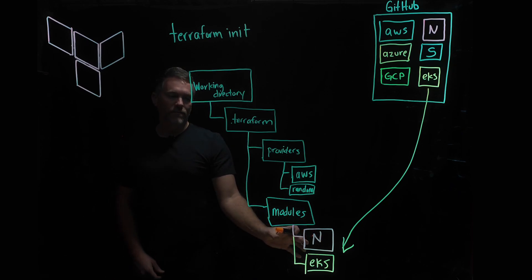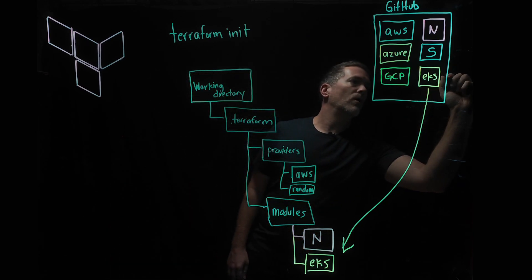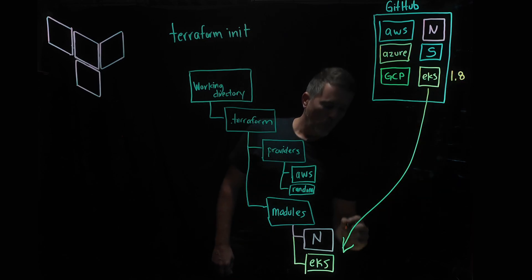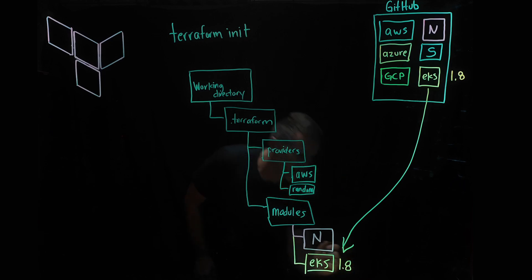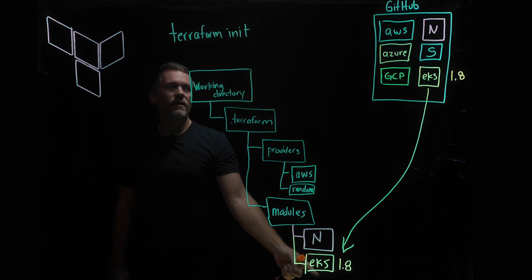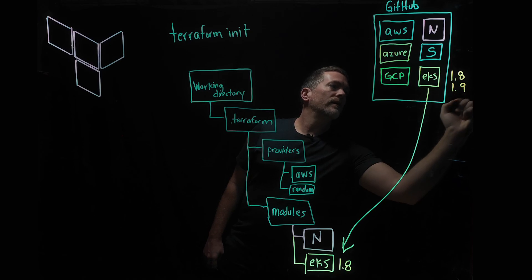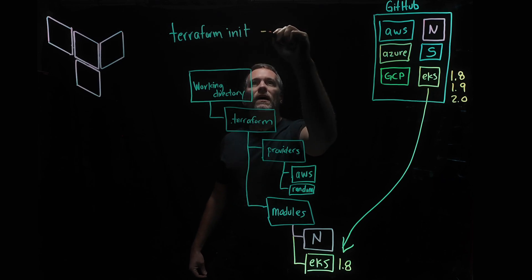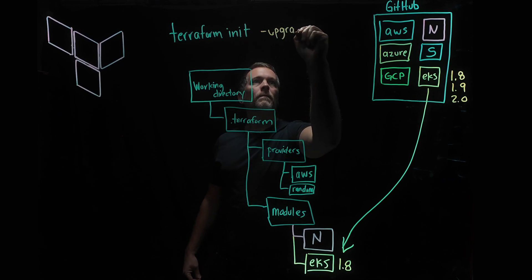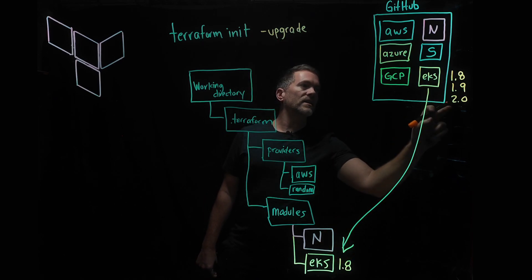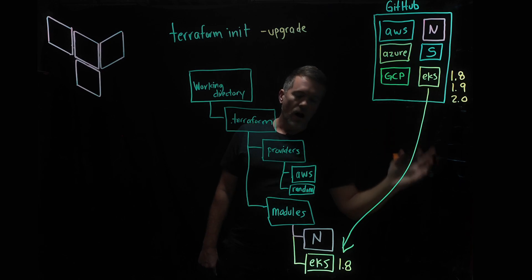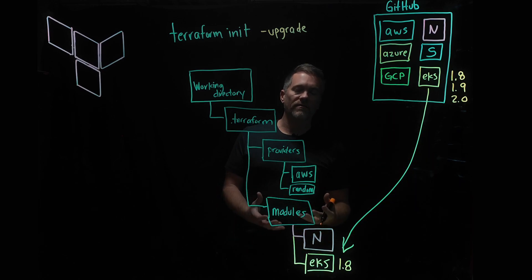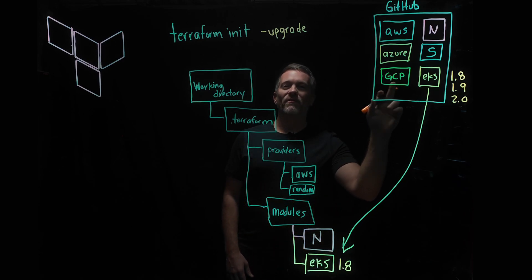This is a specific version of the EKS module — say, for example, if this module was version 1.8, we would download 1.8 and keep that version on our machine. Meanwhile, this may increment to 1.9, 2.0, etc. If we want to update, we run the terraform init -upgrade command. That allows us to tell Terraform to go get the latest version of our module or provider locally, because we've updated our configuration and want to take advantage of new features or get rid of a bug that may exist in a provider or module.